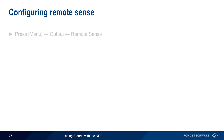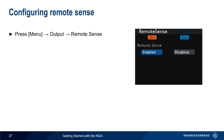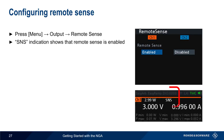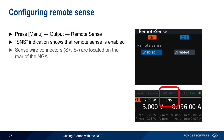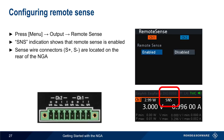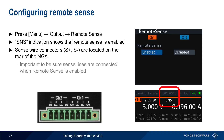To configure remote sense, press the menu hard key and then select output remote sense. If remote sense is enabled for a channel, this is indicated by SNS in the display. The sense wire connectors, S-plus and S-minus, are located on the rear of the NGA. It's important to be sure that the sense lines are connected when remote sense is enabled; otherwise, erroneous voltage and current levels may result.